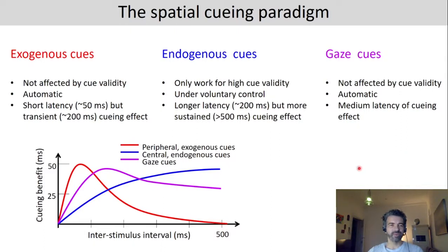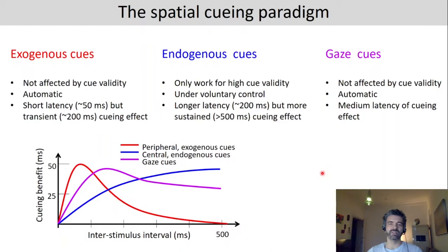To compare these cue types: exogenous cues are not affected by cue validity, are automatic, have a short latency of around 50 milliseconds, but are transient — the cueing effect is gone after about 200 milliseconds. Endogenous cues only work for high-validity cues, suggesting voluntary control; they have a longer latency but are sustained for at least 500 milliseconds. Gaze cues are not affected by cue validity — like exogenous cues in being automatic — but are more sustained, resembling endogenous cues, with a medium latency between the two.